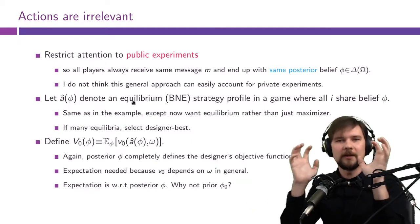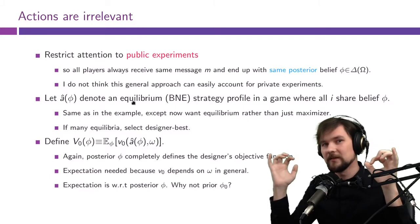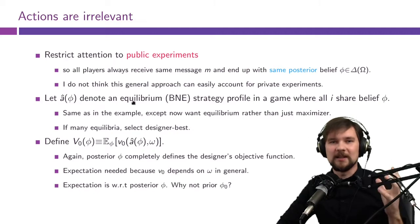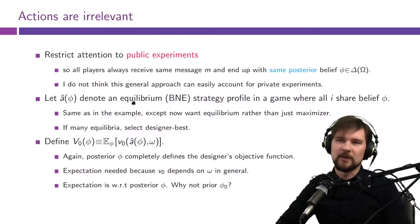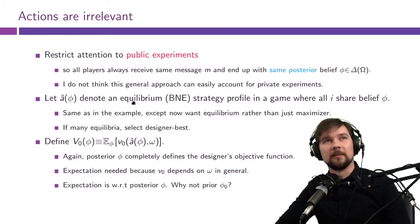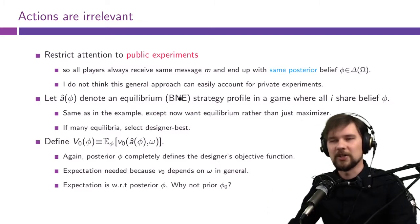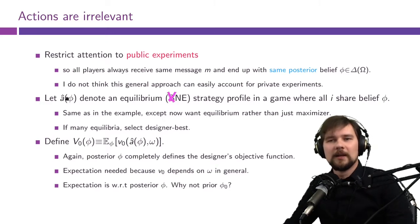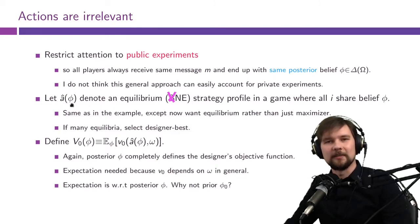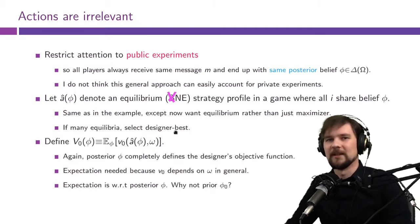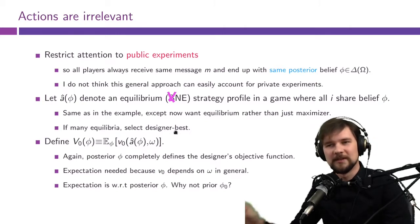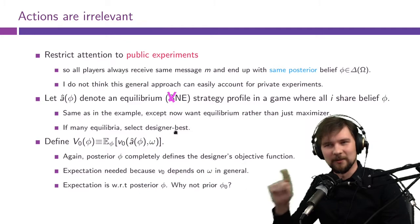So if you have more than one player, messages determine their types, and this means we basically have a Bayesian game — an N-player game where every player has some private message. But with public experiments it will be a game of complete information, so you can relax this to just Nash equilibrium. So â(φ) is a common Nash equilibrium of the game when all players share the same posterior belief φ about the states of the world. If there are many equilibria, we will select the one that is best for the designer.